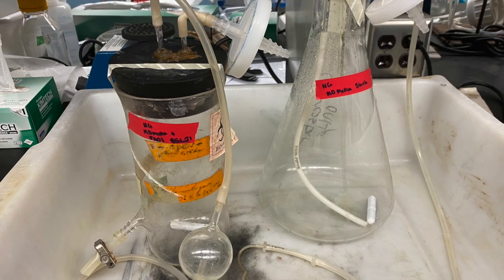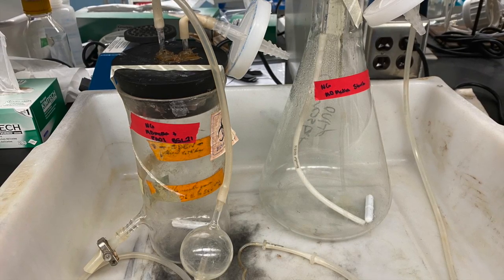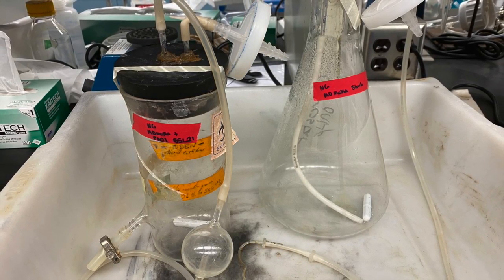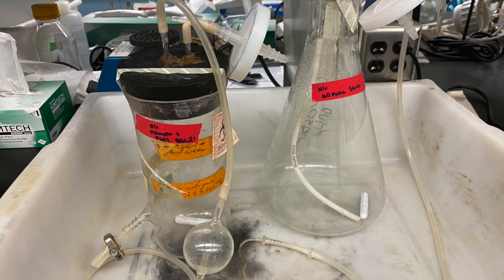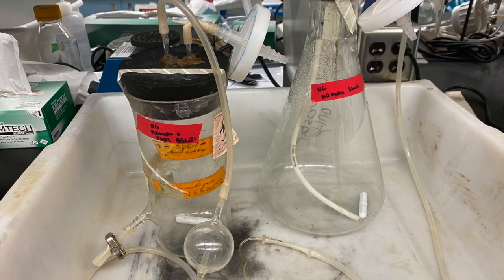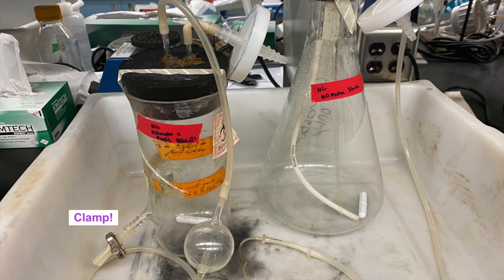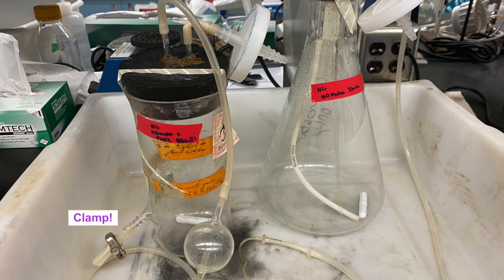After the chemostat has been rinsed, it will be autoclaved. The chemostat equipment will be autoclaved fully assembled. All parafilm around the tubing and around the lids will be removed. Parafilm cannot withstand the heat in the autoclave and will melt.